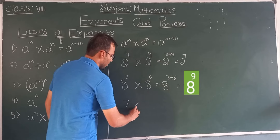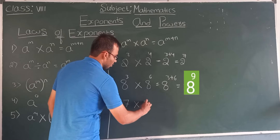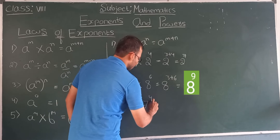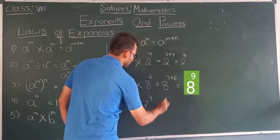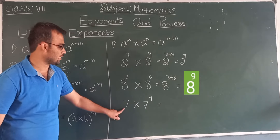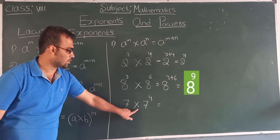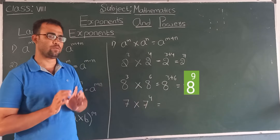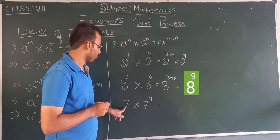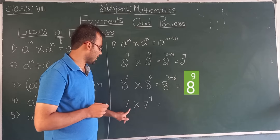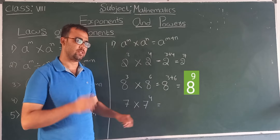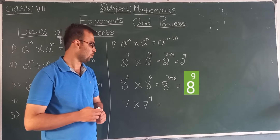You need to add the powers: 3 plus 4 equals 7, giving 2 to the power 7. One more example — suppose 7 multiplied by 7 to the power 4. The base is the same: 7 is the same on both sides.